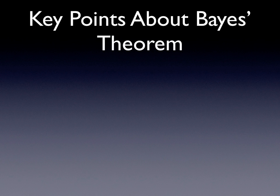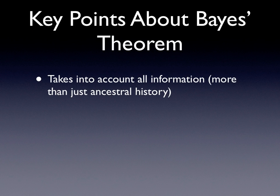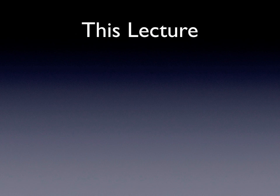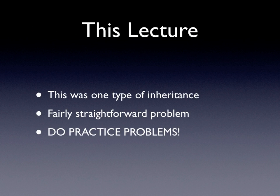Back to our original question: the probability that this woman is a carrier for muscular dystrophy is one-ninth. To wrap up key points: Bayes' Theorem takes into account all the information, more than just ancestral history. Always draw a table when doing these problems — it will make life easier. The prior probability is your ancestral history, the conditional is any additional information, and joint and posterior are just mathematical equations. We only covered one type of inheritance in a straightforward problem, so the best thing to do is practice problems.